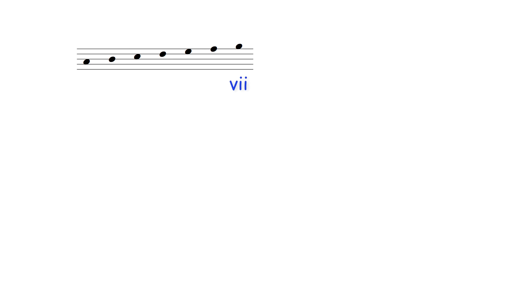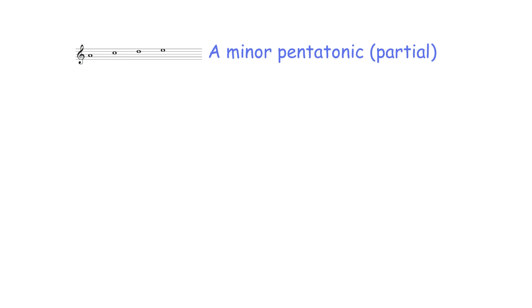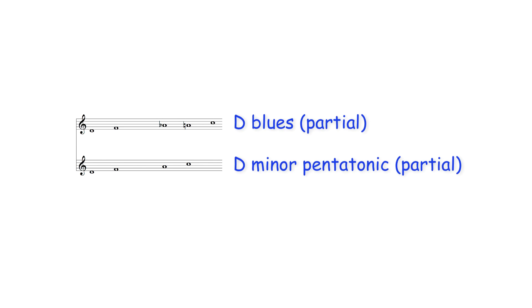The diminished seventh chord occurs on the leading note of the harmonized harmonic minor scale. A G sharp diminished seventh chord therefore is chord VII in the A harmonic minor scale. The scalic or modal options for improvising over a G sharp diminished seventh chord therefore include the G sharp altered scale — the seventh mode of the A harmonic minor scale — and partial A minor and D minor pentatonic scales.